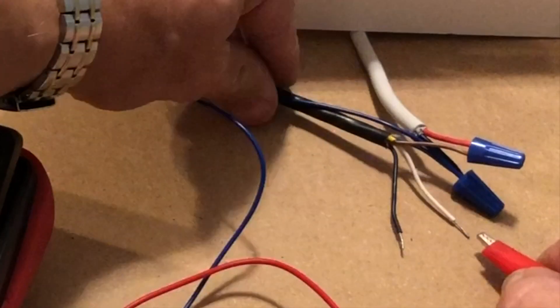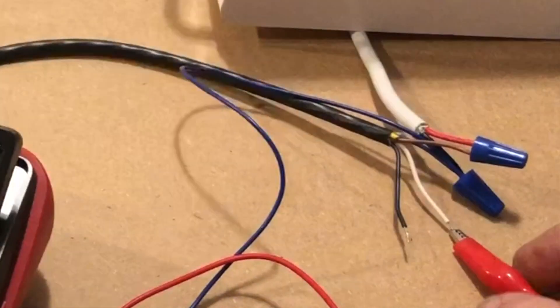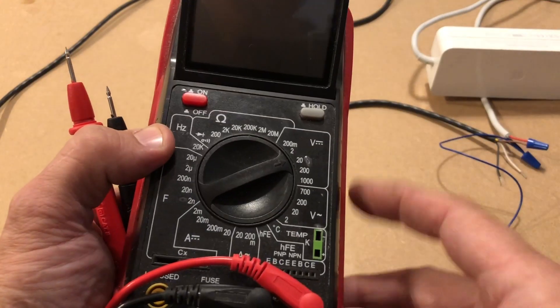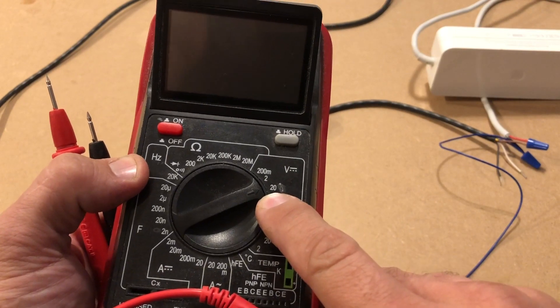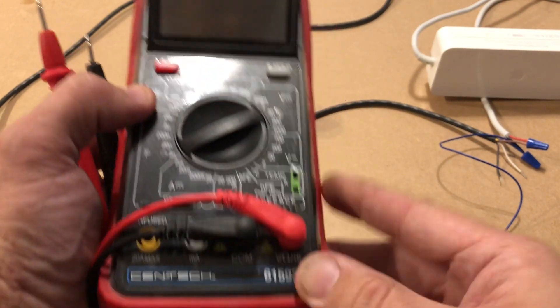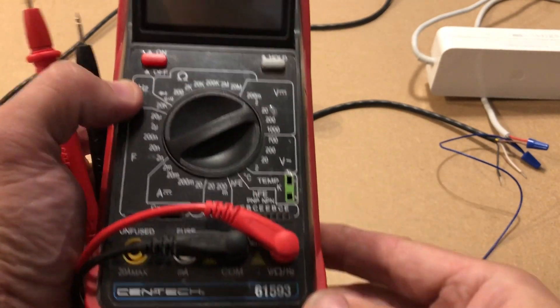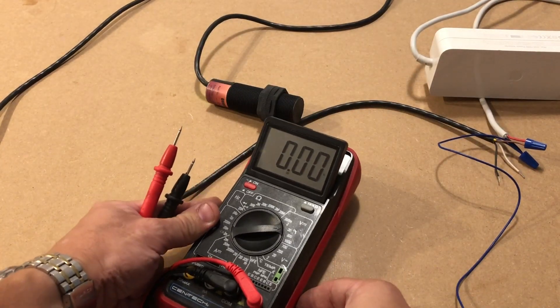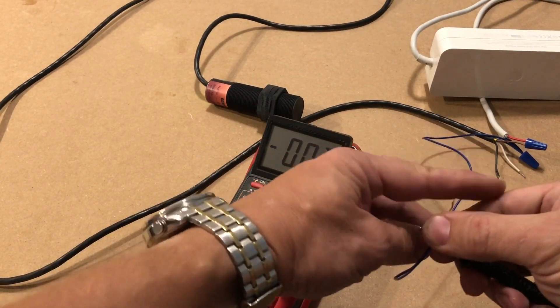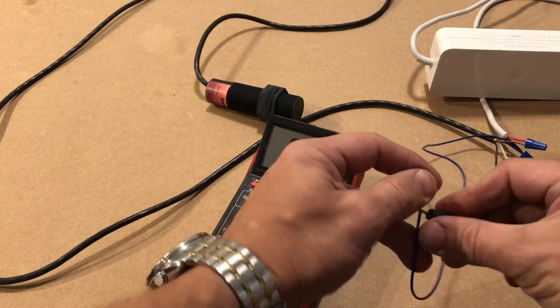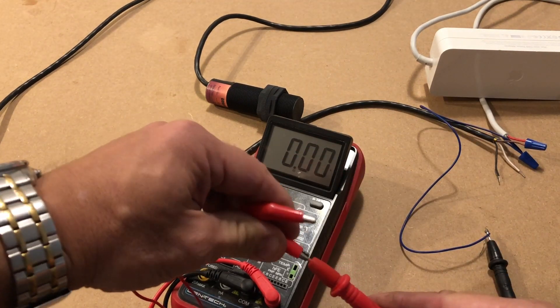First I am going to test the white wire which outputs 0 to 10 volt DC analog signal. Making sure that the proper range of the multimeter as well as probe clamps are selected, we connect the black probe to our common wire and the red probe to our signal wire.